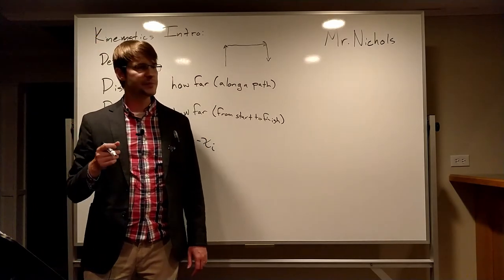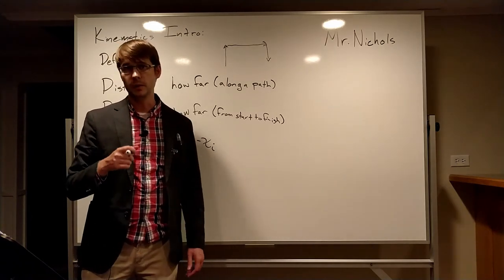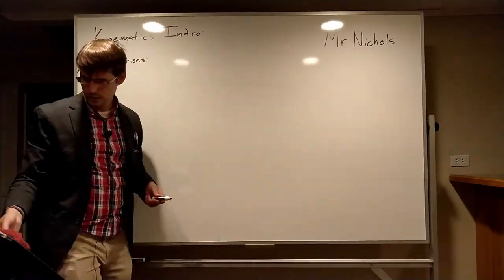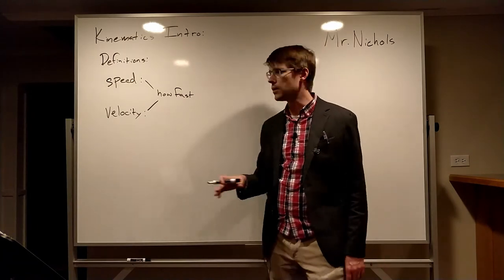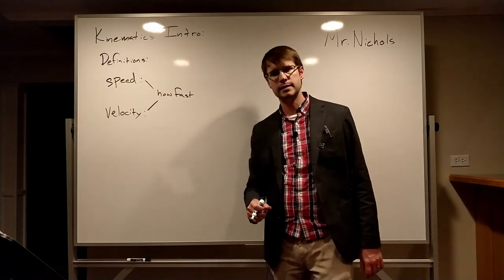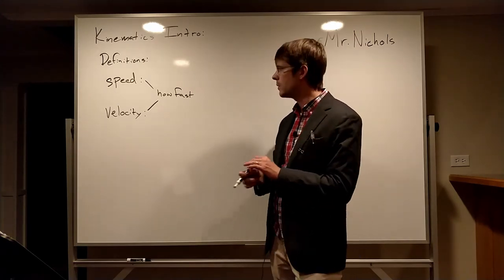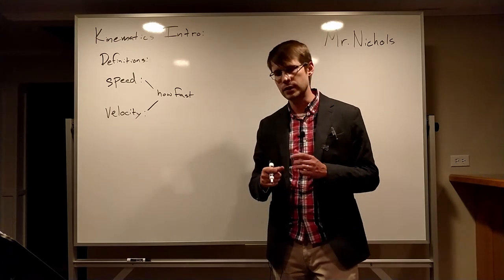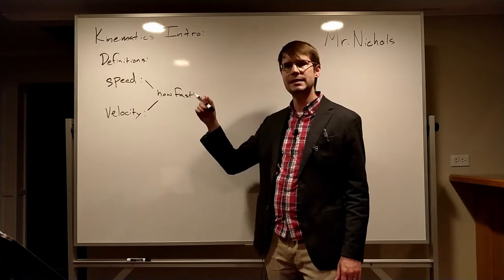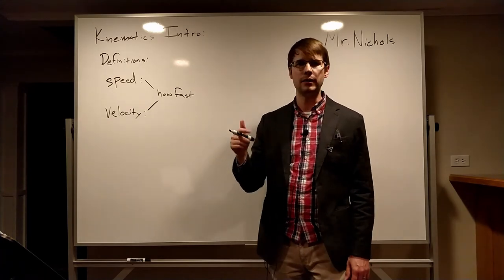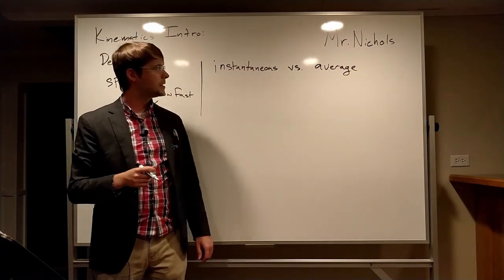Now, next thing we're going to look at is speed and velocity. It's a similar relationship between these two, but it's not exactly the same thing. Both of these are how fast an object is moving. Speed is a scalar. It's just how fast you're going. That's what your speedometer in your car tells you. Velocity tells you how fast and also the direction that you're going in. The big distinction though is there's different kinds of these as well: instantaneous and average speed and velocity.